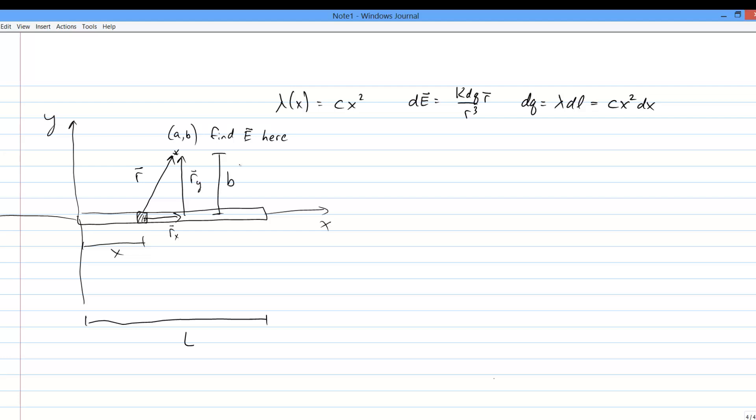The horizontal component might point either left or right, depending on where the dq is, and is a variable length. Working out the geometry, we get the r vector is a minus x i hat plus b j hat. And the magnitude of the r vector is easy enough.